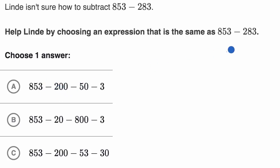That makes sense because we have 200 right over there. Then they subtract out 50 and then they subtract out 3. So the 200 and the 3 make sense.